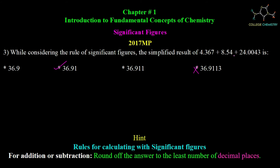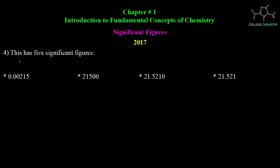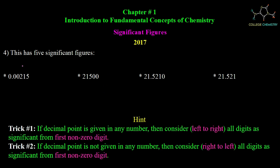Question number 4 asks which number has 5 significant figures, with four options given. We check each option. For numbers where the decimal point is given, we consider left to right from the first non-zero digit. The first non-zero digit here is 2, and we count all digits from there.